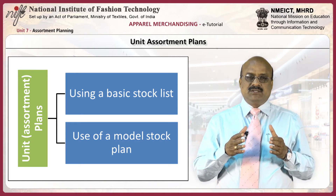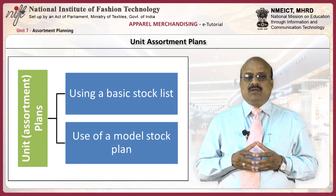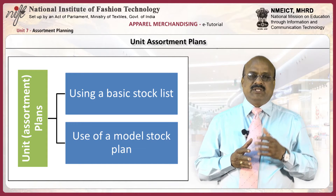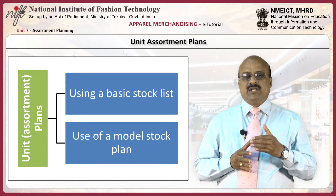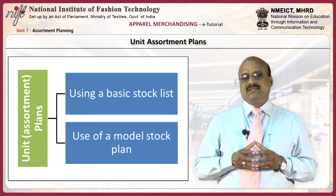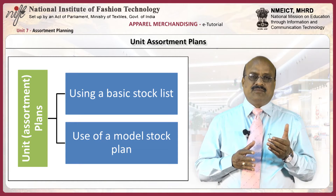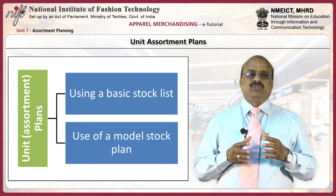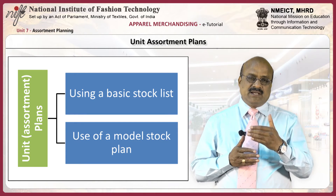Assortment plans may be developed in two ways. The first method is through the use of a basic stock list, and the second method is through the use of a model stock plan. All merchandise assortments can be planned using either of these two methods; however, the method used depends on the kind of merchandise under consideration.